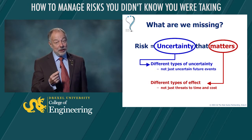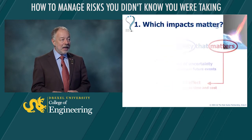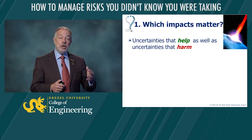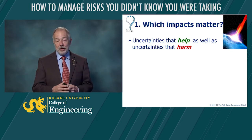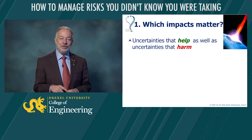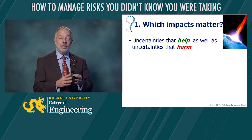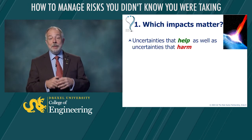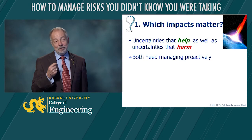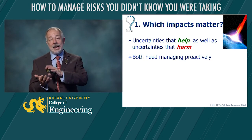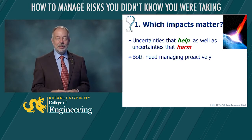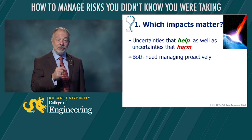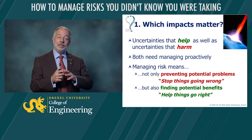Let's start with the easy one — the different ways in which things matter. How can things matter to a project? We call these impacts. Impacts include things that may or may not happen in the future that, if they do occur, are bad for us — those are the threats we typically think of. But there are also uncertainties that, if they happen, would help us: things that might or might not occur, but if they do occur, they would save time or save money, making it easier to achieve our objectives. Both uncertainties that help and uncertainties that harm us are important. Managing risk needs to include both.